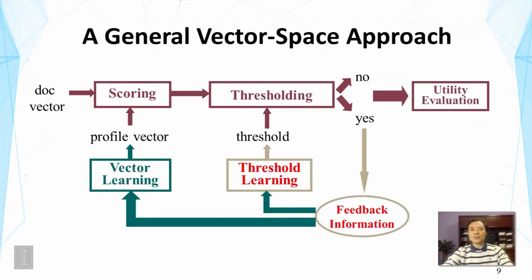If we generalize the vector space model for filtering, the document vector is fed into a scoring module that already exists in a vector space model search engine. The profile is treated as a query, so the profile vector is matched with the document vector to generate a score. That score goes into a threshold module that says yes or no. If yes, the document is sent to the user, and the user's feedback is used to both adjust the threshold and update the vector representation.